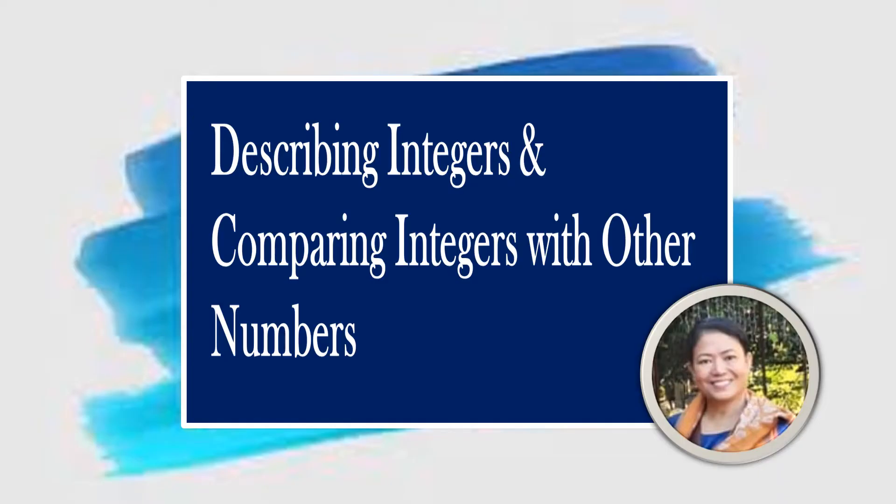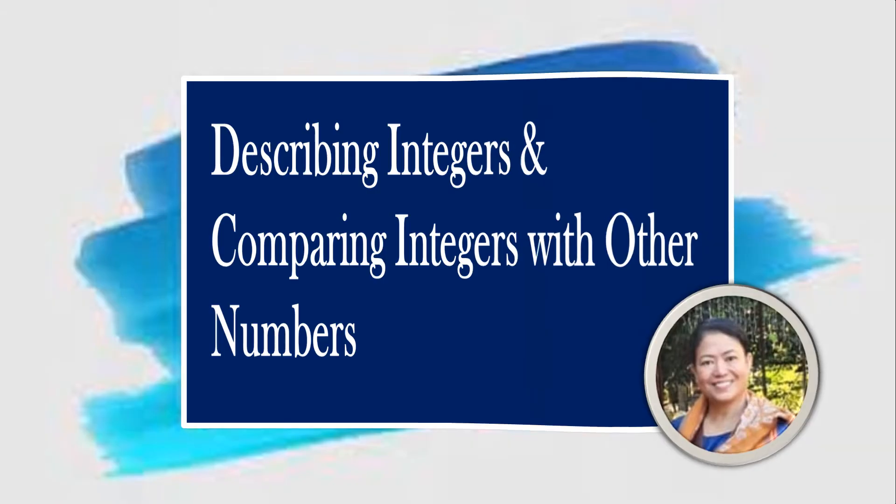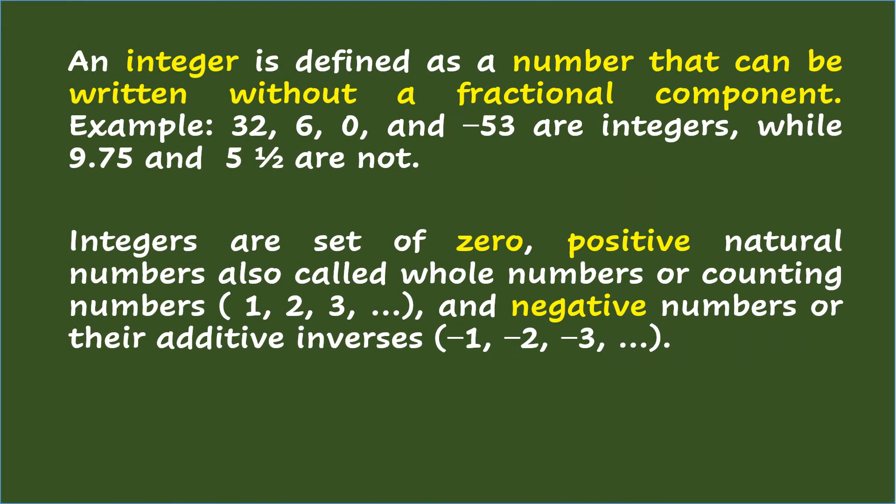Describing Integers and Comparing Integers with Other Numbers. An integer is defined as a number that can be written without a fractional component. Examples: 32, 6, 0, and negative 53 are integers, while 9.75 and 5½ are not.